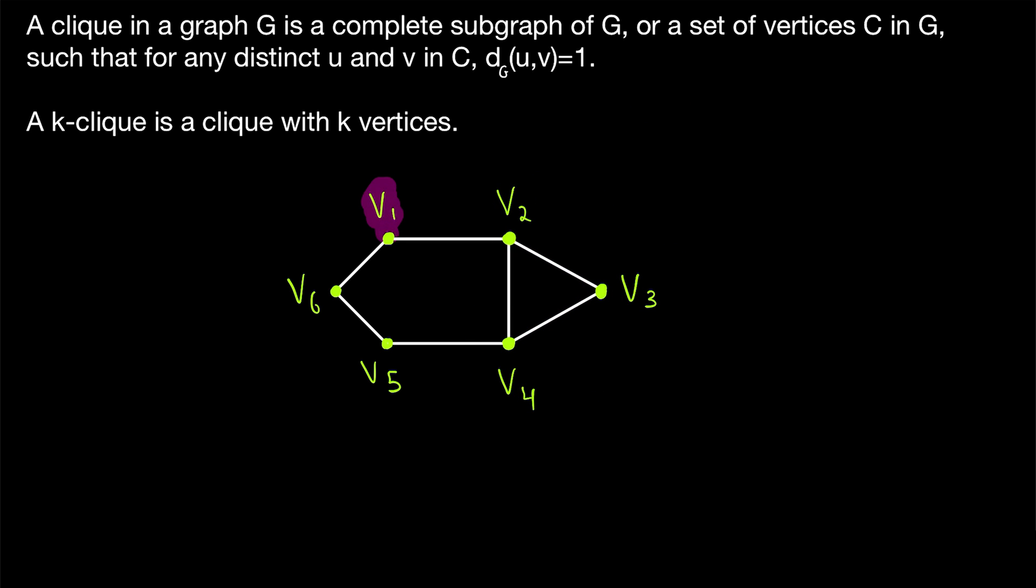Another example, the end vertices of any edge are adjacent to each other, and they will make up a click with two vertices, called a two-click. Note that some texts will define clicks to be maximal. If a click has to be a maximal complete subgraph, then the vertices v2 and v3, for example, do not make up a click.